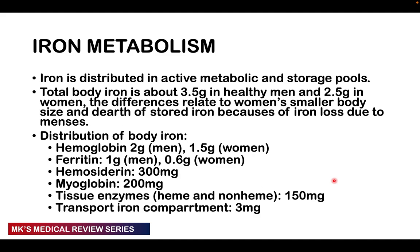Iron is distributed as active metabolite and in storage pools. Total body iron is about 3–5 grams in a healthy male and about 2.5 grams in women — women have smaller bodies and lose iron through monthly menses. Distribution: hemoglobin — 2 g in men, 1.5 g in women; ferritin (storage) — 1 g in men, 0.6 g in women; hemosiderin (another storage form) — about 300 mg; myoglobin — about 200 mg; tissue enzymes (heme and non-heme) — 150 mg; transport iron — about 3 mg. Total: 3.5 g in men, 2.5 g in women.